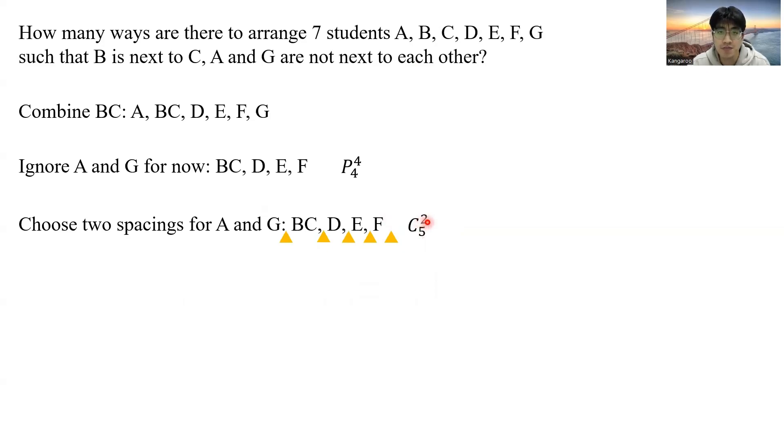Now remember, we haven't solved this problem. Because I have bunched B and C, but B and C can still switch places. As well as for A and G, once I have chosen two spacings out of the five spacings, A and G can also switch places. So my final answer will be 4P4 times 5C2 times two, from B and C switching places, times two, from A and G switching places.